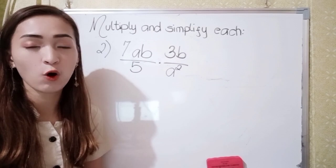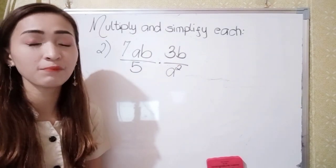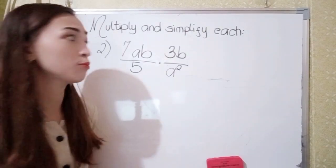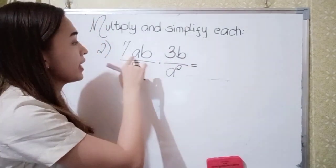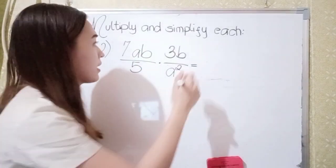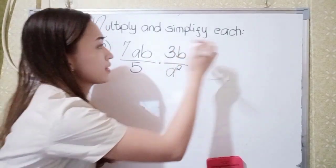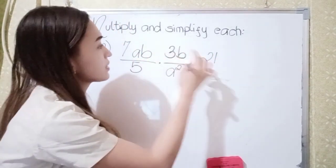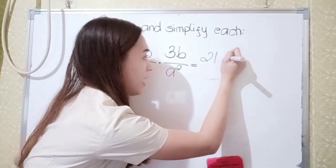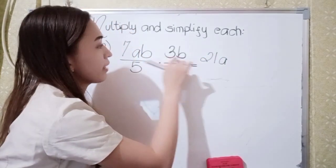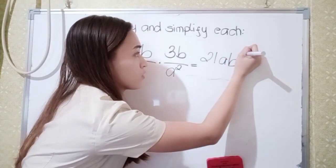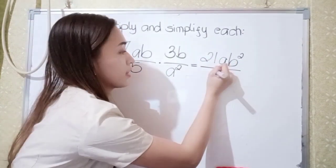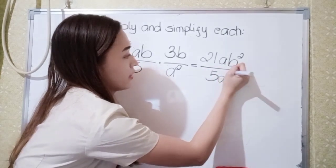In number 2, we have 7ab over 5 times 3b over a squared. Again, multiply numerator to numerator: 7ab times 3b — so 7 times 3 is 21, then a, and b times b is b squared. Next, denominator to denominator: 5 times a squared is 5a squared.